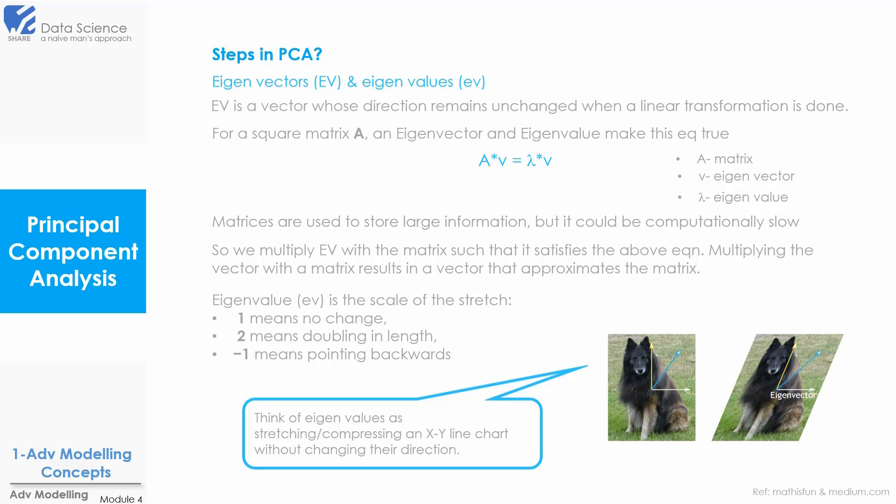So I hope with this we have got some clarity about eigenvector and eigenvalues. Now we will not be calculating it manually, but as I said earlier it is at the core of PCA. Hence it was important that we revisit our elementary mathematics and just refresh our memory on eigenvector and eigenvalues. Now let's see what are the steps involved in PCA.